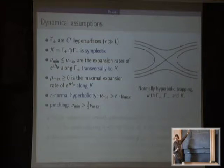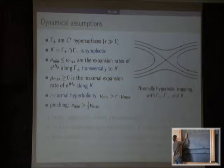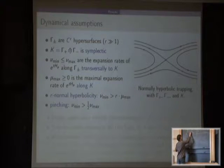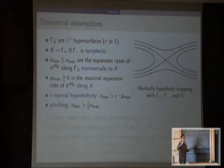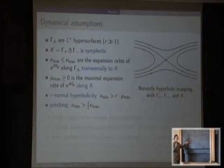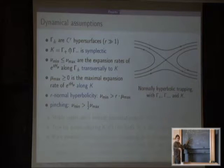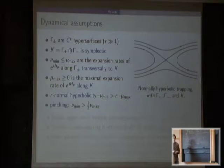For the Schwarzschild-de Sitter metric, the event horizon at r = 2m is irrelevant for trapping. If you take r = 3m, the so-called photon sphere, and take a light ray tangent to it, it will stay tangent forever. You get a situation where the trapped set is the cotangent bundle to the photon sphere, and these rays exponentially approach the photon sphere and wind around it. These are the incoming and outgoing tails.